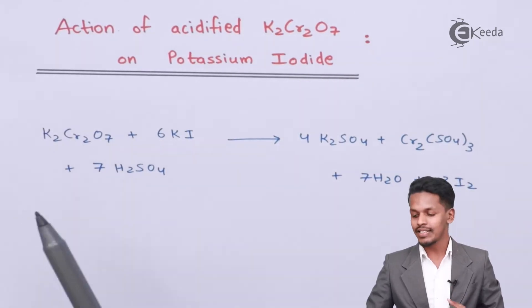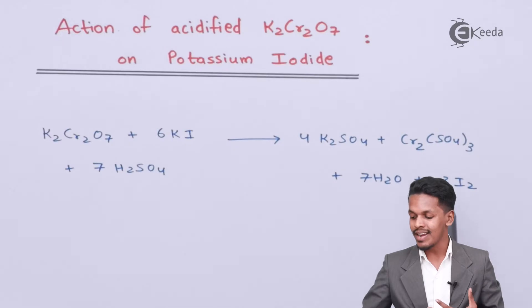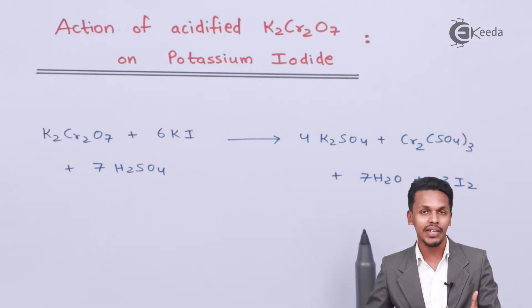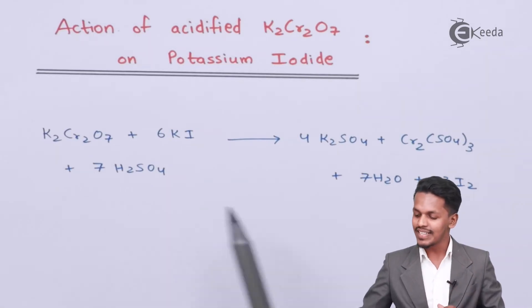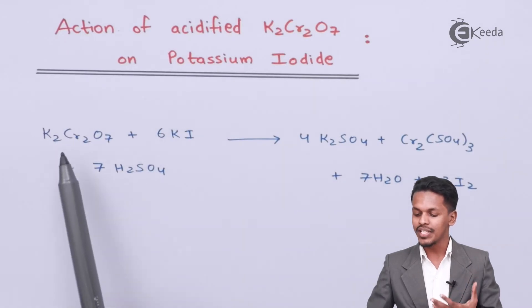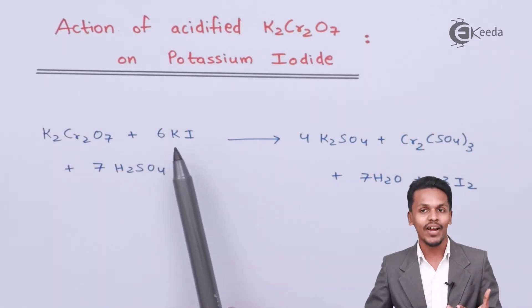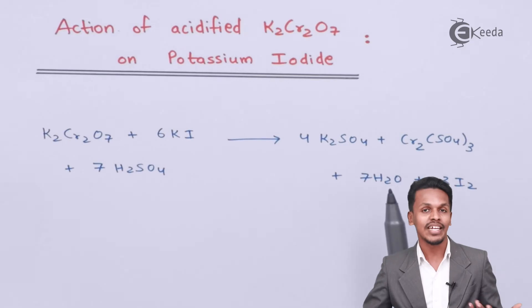The solution is initially orange-red in color, but after the reaction has happened, there is an evolution of iodine gas which makes the solution brownish in color. This indicates that the reaction has occurred. So therefore, this is the reaction of K2Cr2O7 with potassium iodide and these are the products we get.